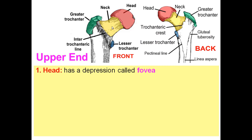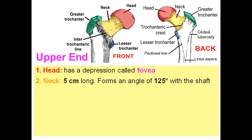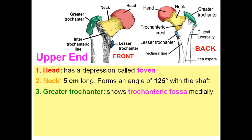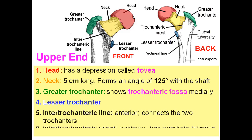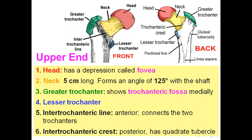The neck is about five centimeters long and forms an angle with the shaft of the femur of about 125 degrees. The greater trochanter is lateral in position and has the trochanteric fossa medially. Then the lesser trochanter. The two trochanters are connected anteriorly by the intertrochanteric line and connected posteriorly by the intertrochanteric crest, which has the quadrate tubercle.